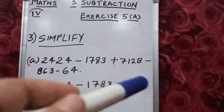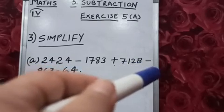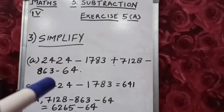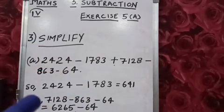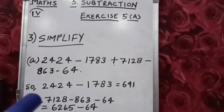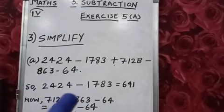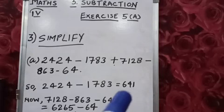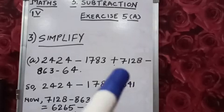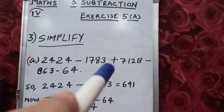First we will subtract these two numbers: 2,424 minus 1,783. We will get 641. Then we will subtract all the numbers given after the plus sign.